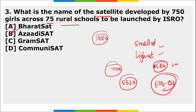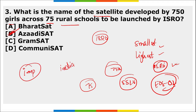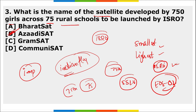The SSLV will carry EOS-02, an indigenously developed earth observation satellite, and CubeSat AzaadiSAT, which was developed by 750 school girls across 75 schools in rural India. The satellite will carry a special space song along with the national anthem. The Indian tricolor will unfold in space to mark the 75th year of independence.